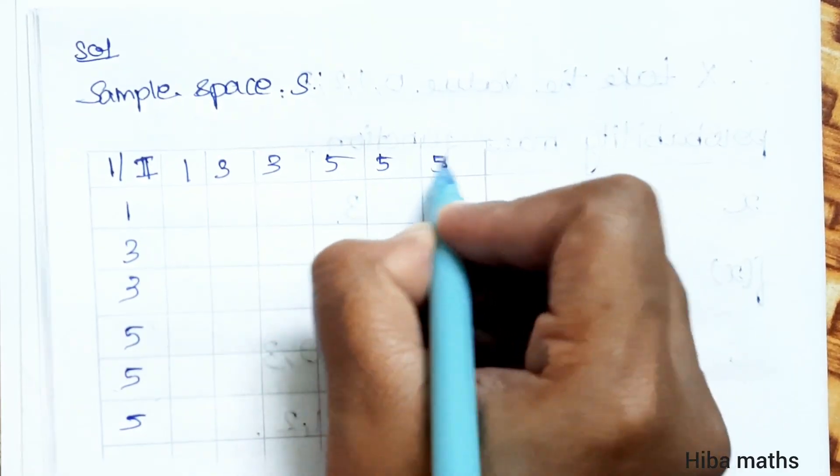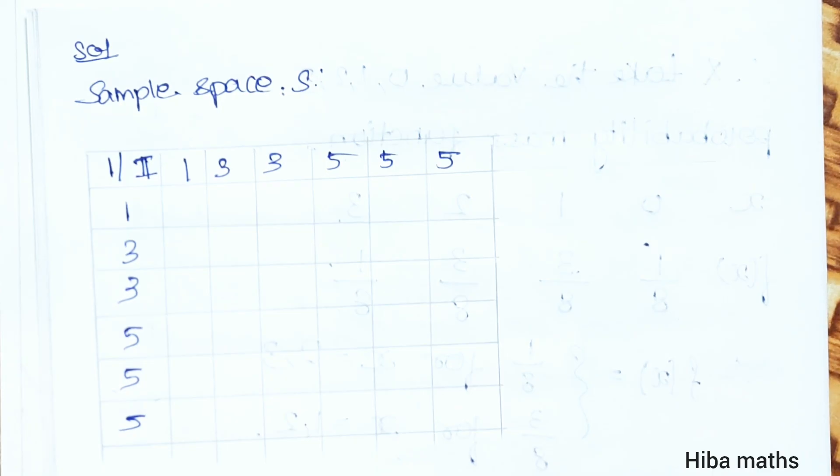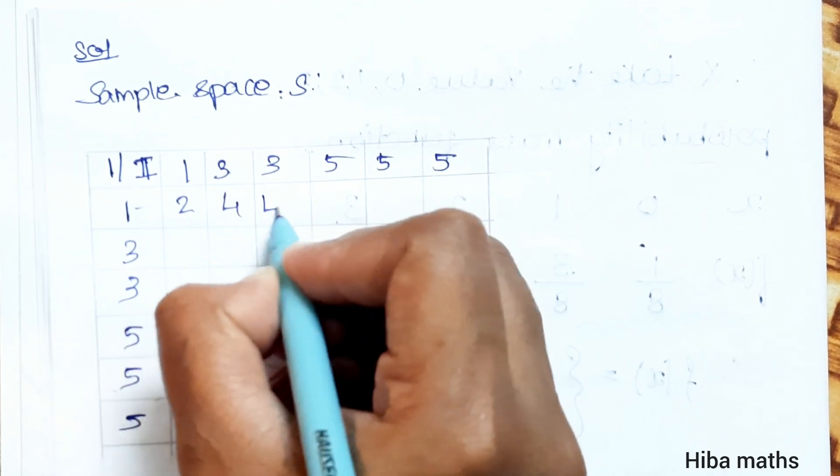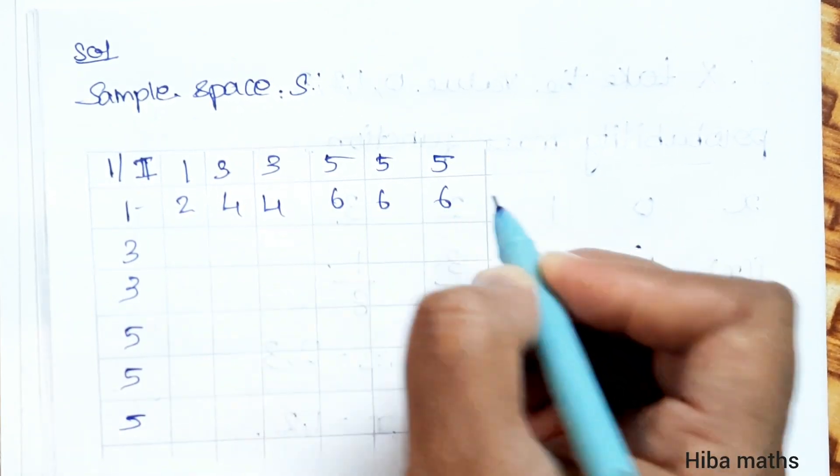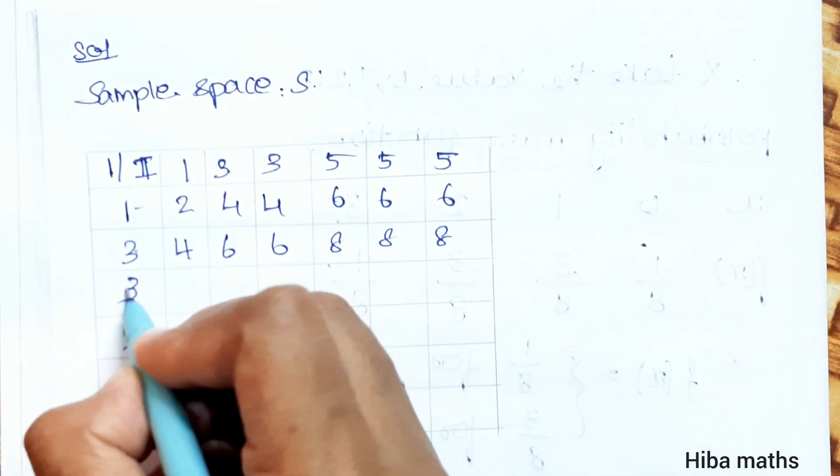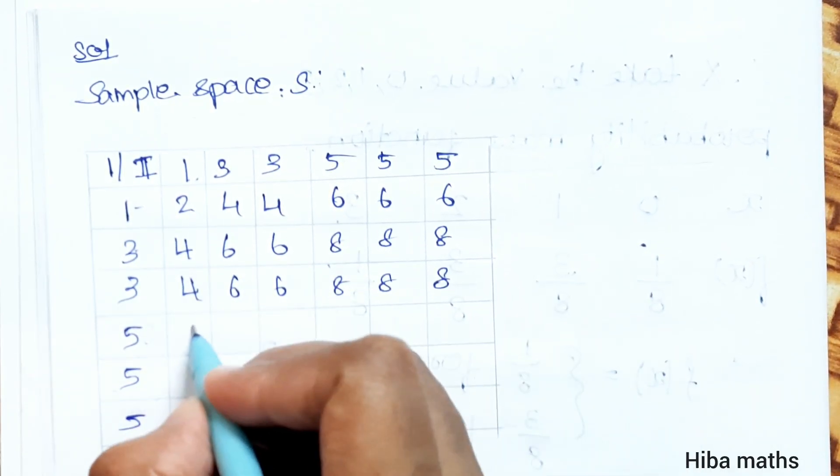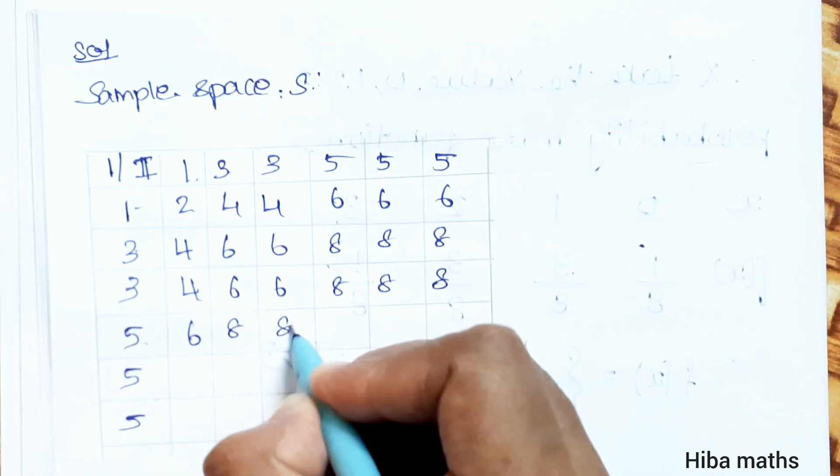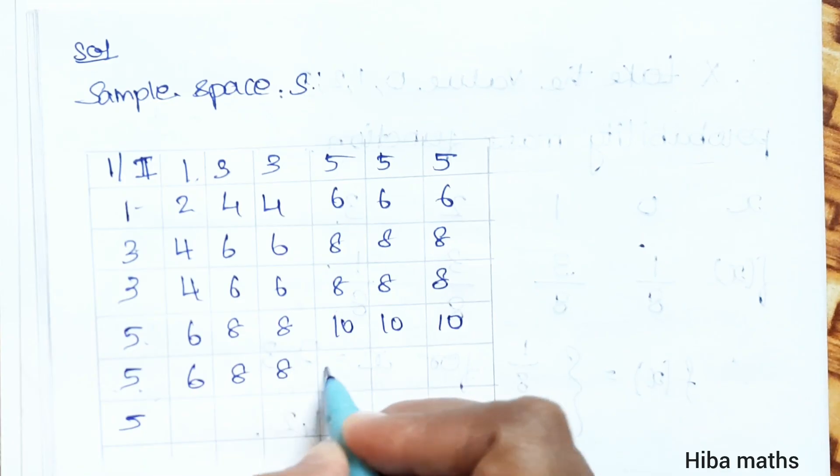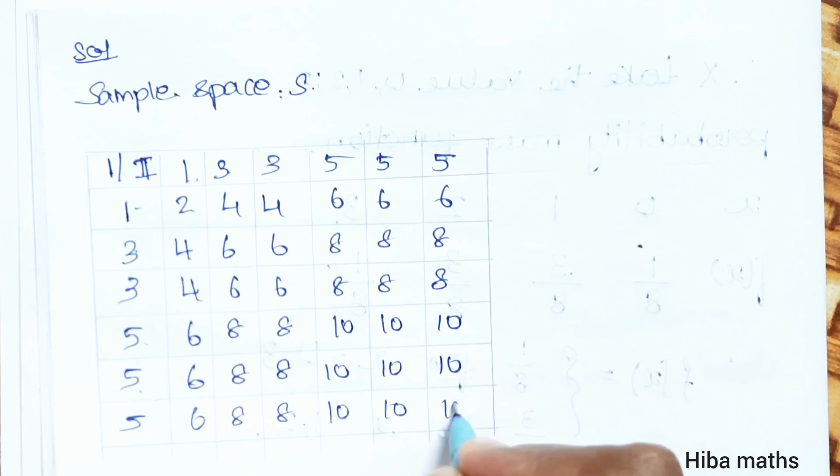Now we will create the sample space. When we throw the die twice, first and second throw, we will add the results. 1 plus 1 equals 2, 1 plus 3 equals 4, 4, 6, 6, 6. 3 plus 1 equals 4, 6, 6, 8, 8. Another 3 plus 1 equals 4, 6, 6, 8, 8. 5 plus 1 equals 6, 5 plus 3 equals 8, 8, this is 10. 5 plus 1 equals 6, 8, 8, 10, 10, 10.